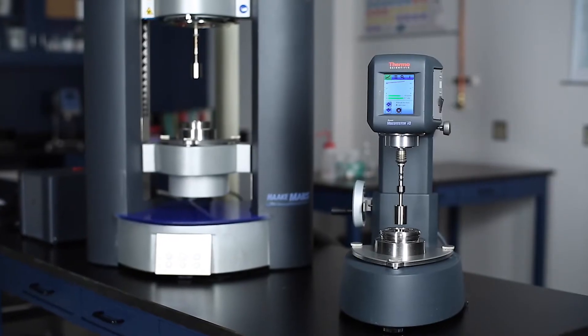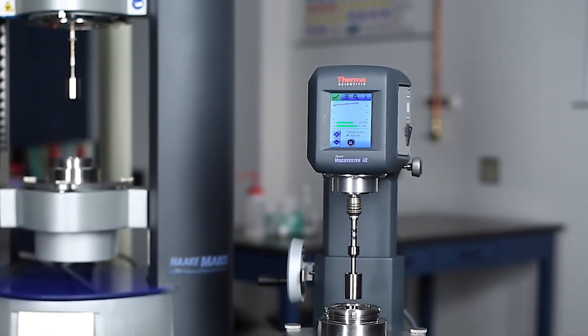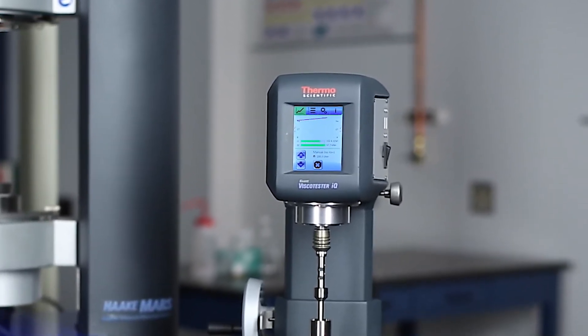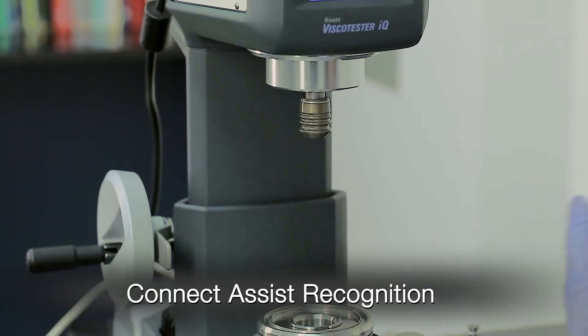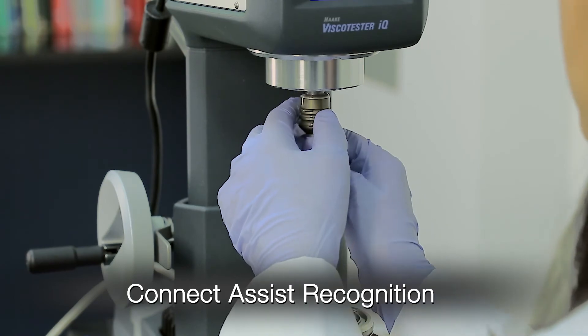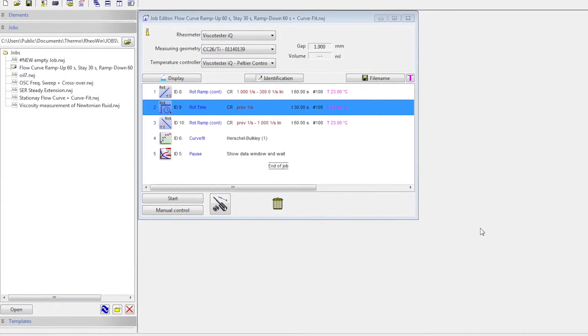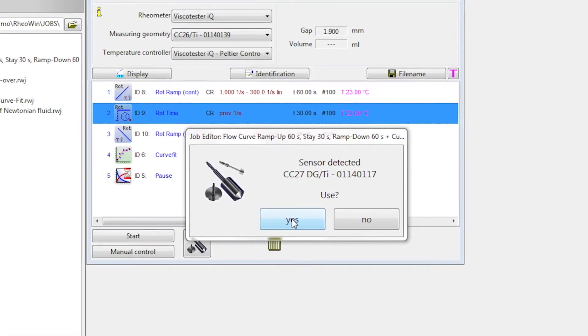The Haake ViscotesterIQ Rheometer gives you maximum flexibility to design solutions meeting the individual requirements of your quality control laboratory. The exclusive Connect Assist provides new quick coupling capabilities for measuring geometries and temperature modules and guarantees perfect alignment, automatic recognition and integrated feedback for job optimization.